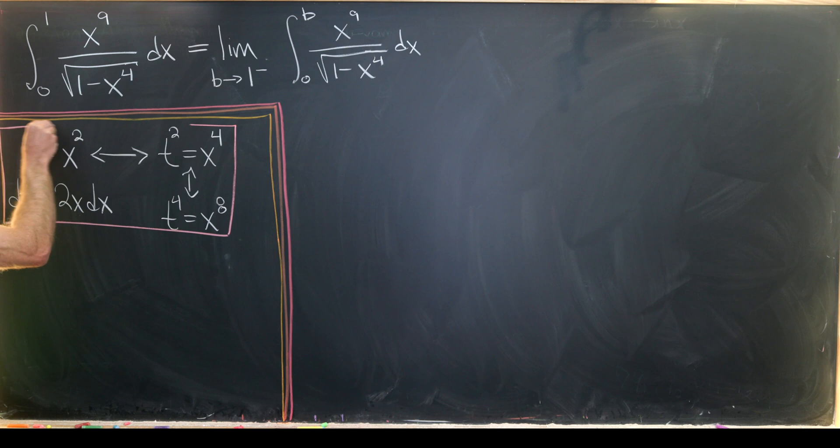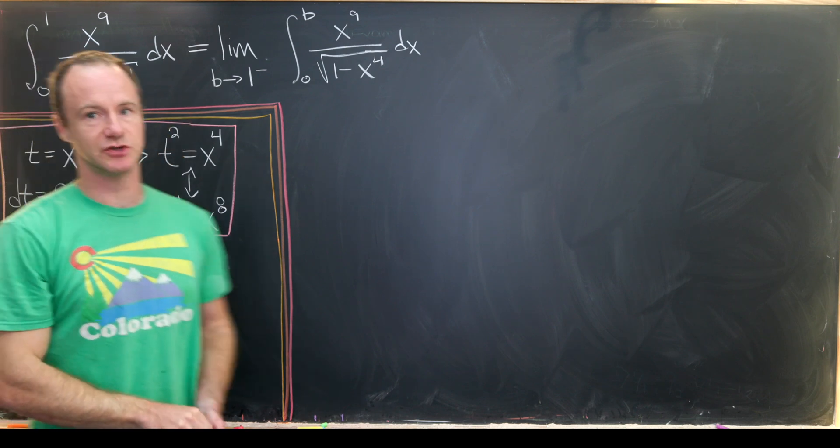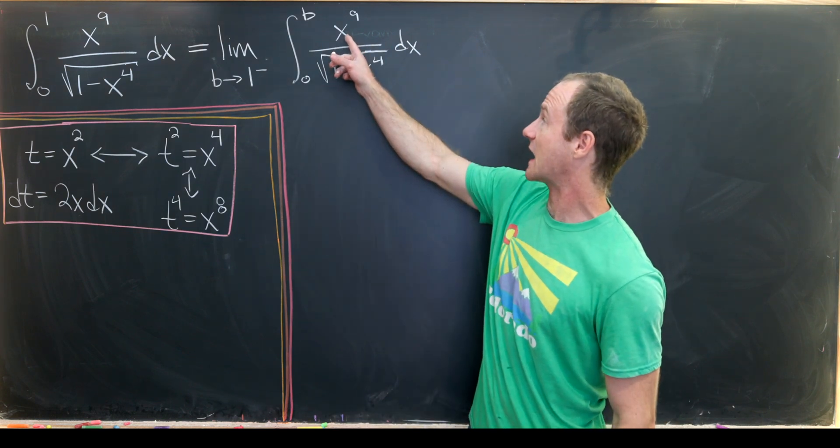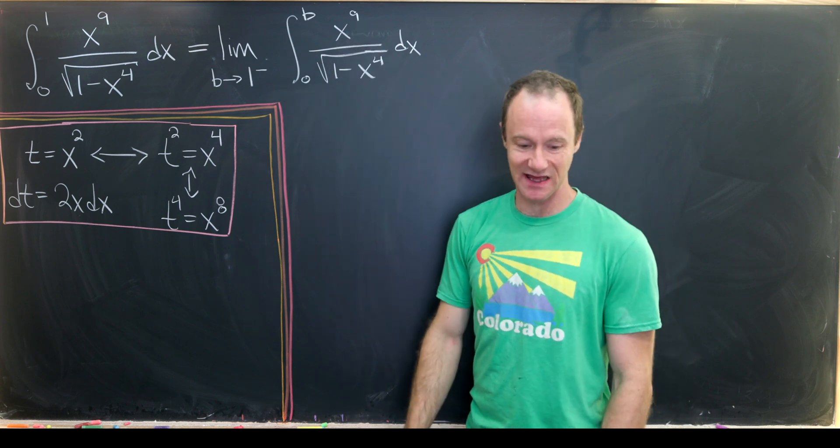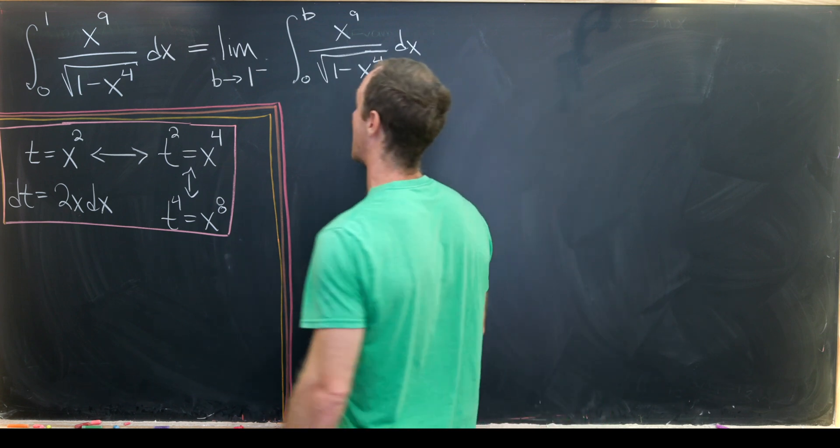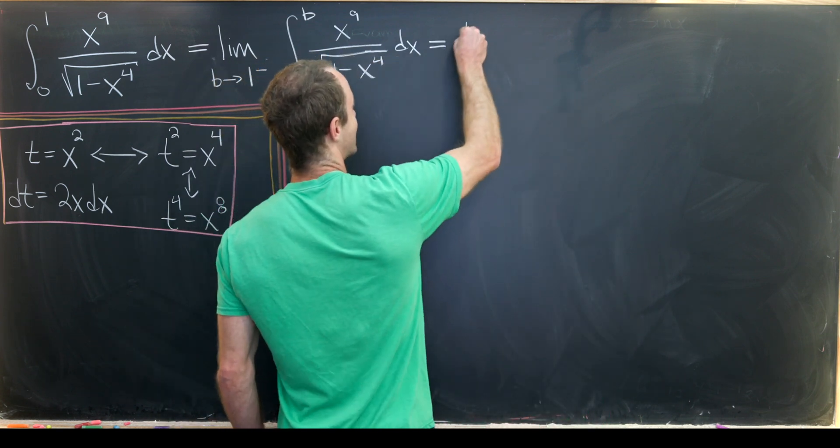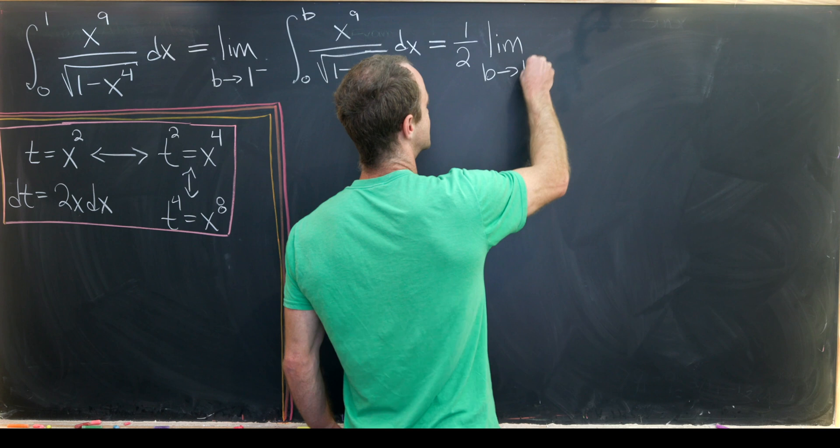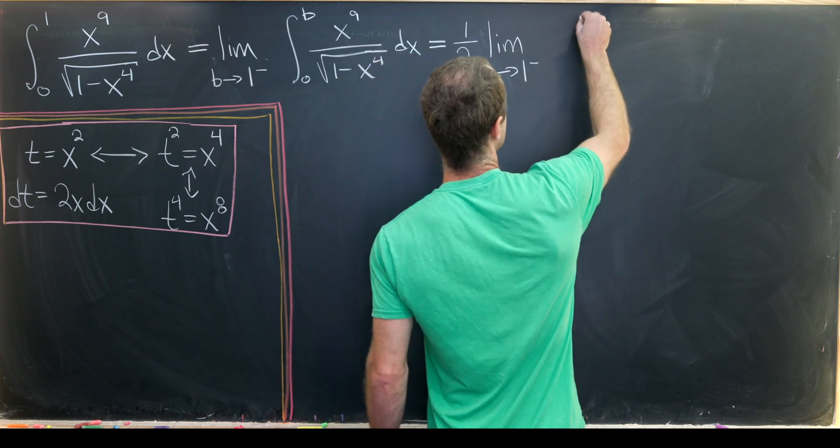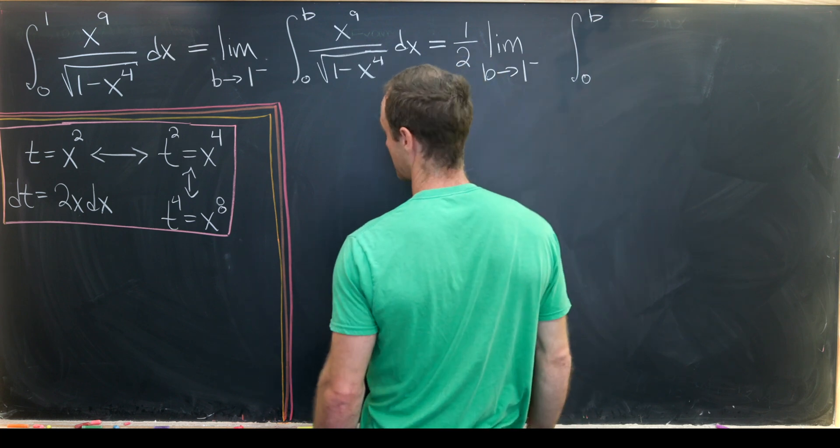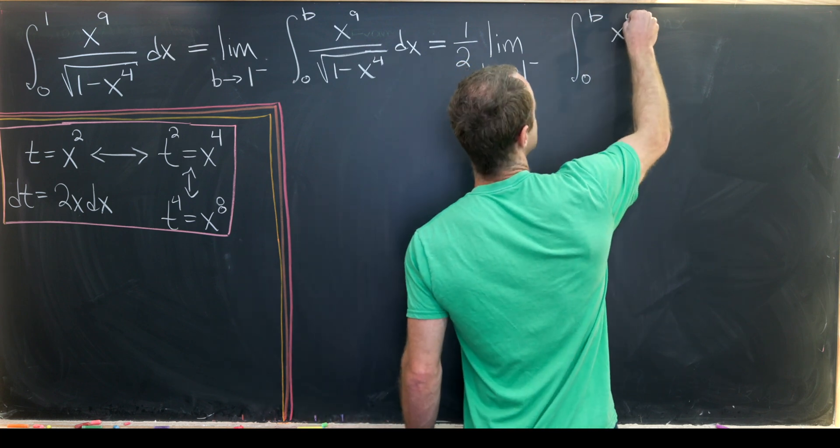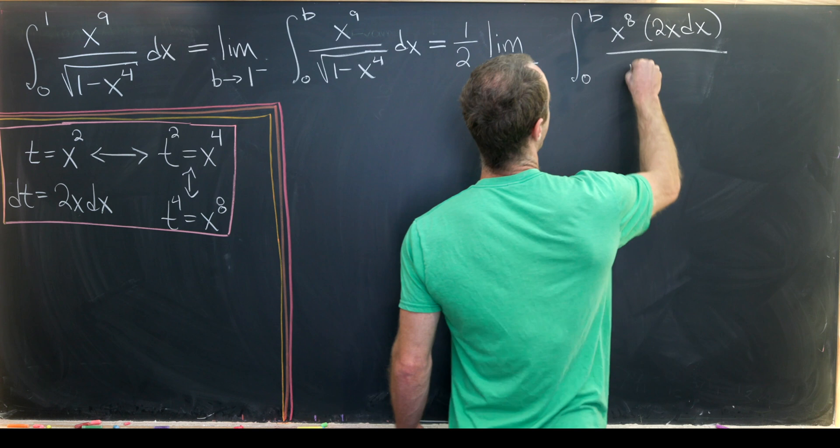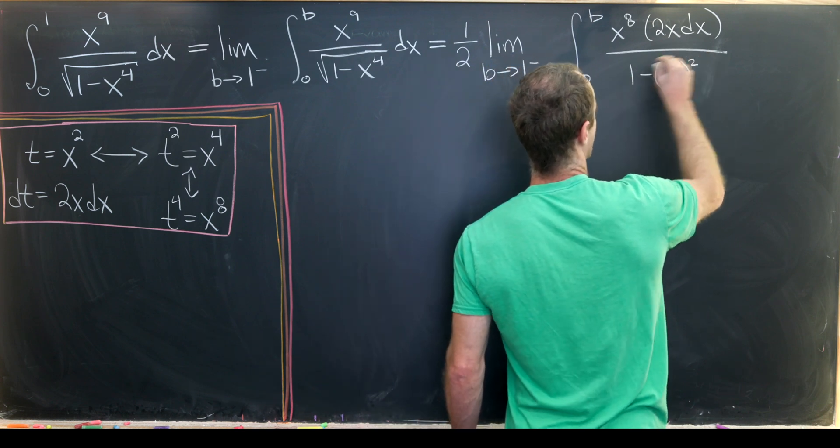Notice we've got 2x dx there, but we only have x dx after factoring out x^8. So we can make up for that by bringing a half out. We can bring that half out of the limit as well because it's a constant. So we have 1/2, then the limit as b approaches 1 from below, and the integral from 0 to b of...